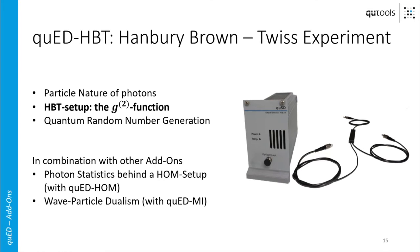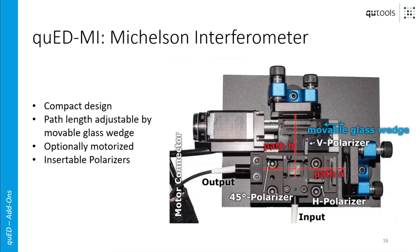We already talked about photon statistics with the Hong-Ou-Mandel setup, but you can also nicely show the wave-particle dualism when you employ the HBT setup behind an interferometer like the Q-Add MI Michelson interferometer. Basically we have an input fiber, the photons hit a beam splitter in the middle, and they can go either path A or path B, are reflected back to the beam splitter, and then go to the output where they are coupled into a fiber again leading to the detection unit. The Michelson interferometer was developed with path lengths as short as possible, since short path length corresponds to good interferometer stability. To observe interference you change the path length in at least one path using a movable glass wedge.